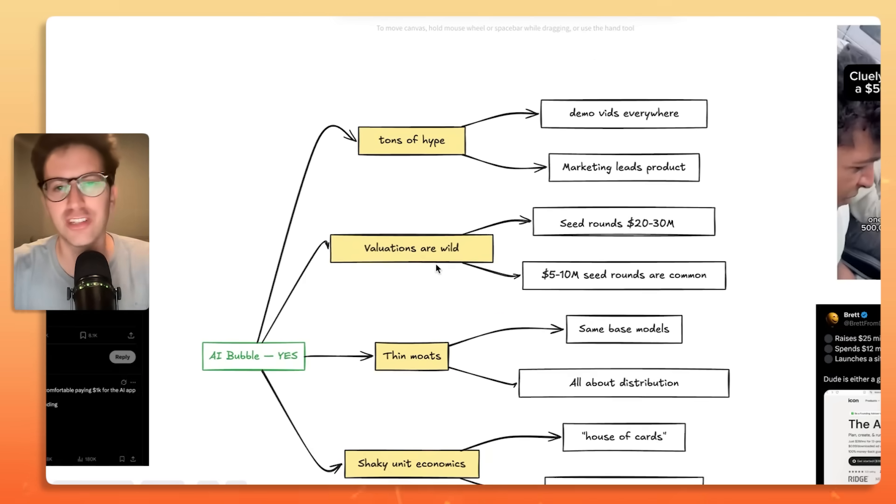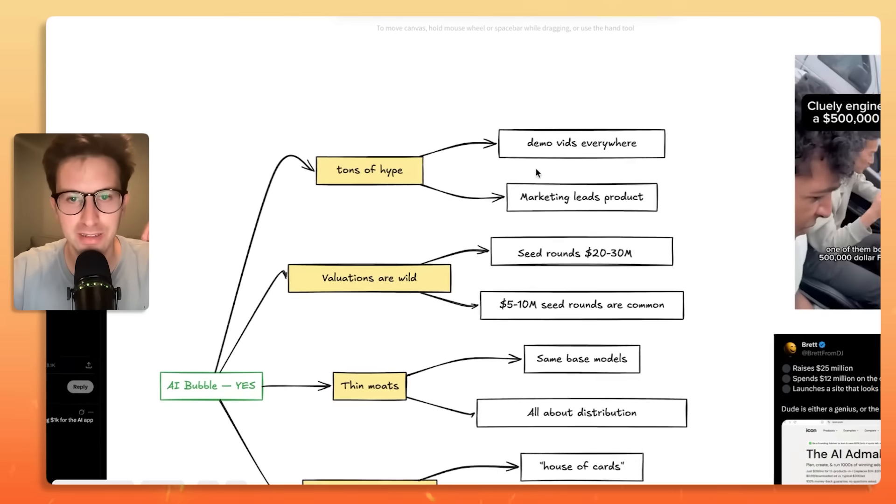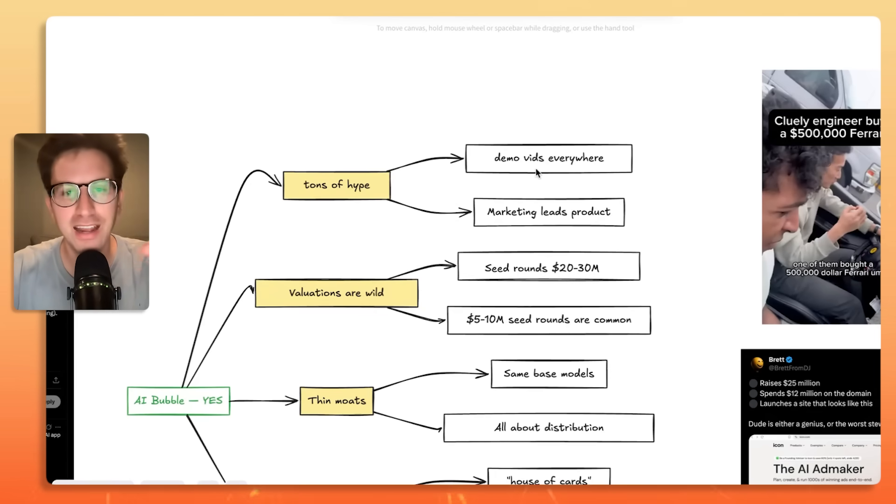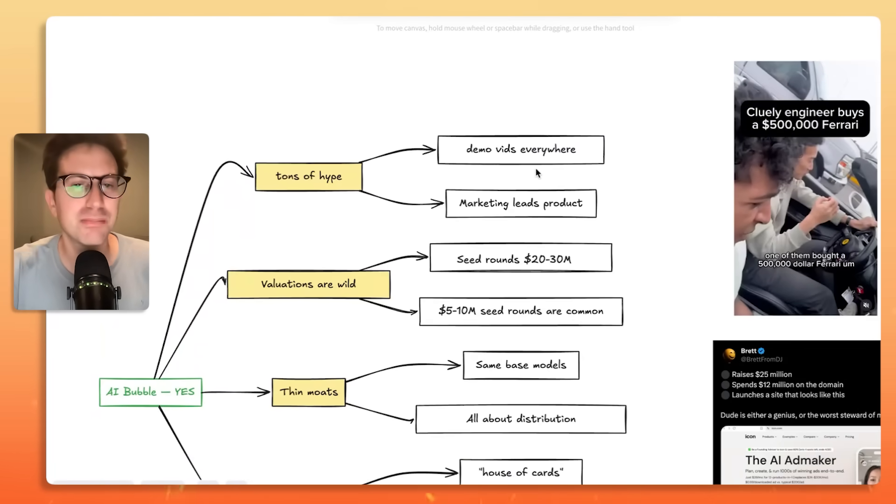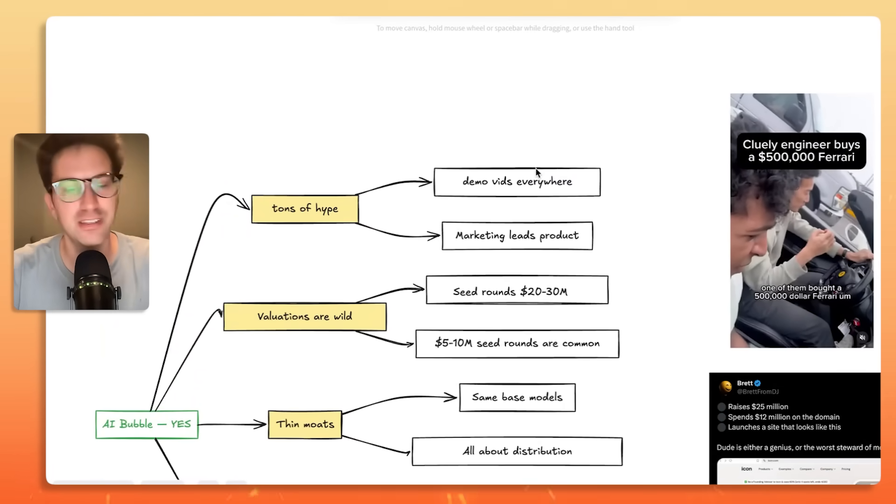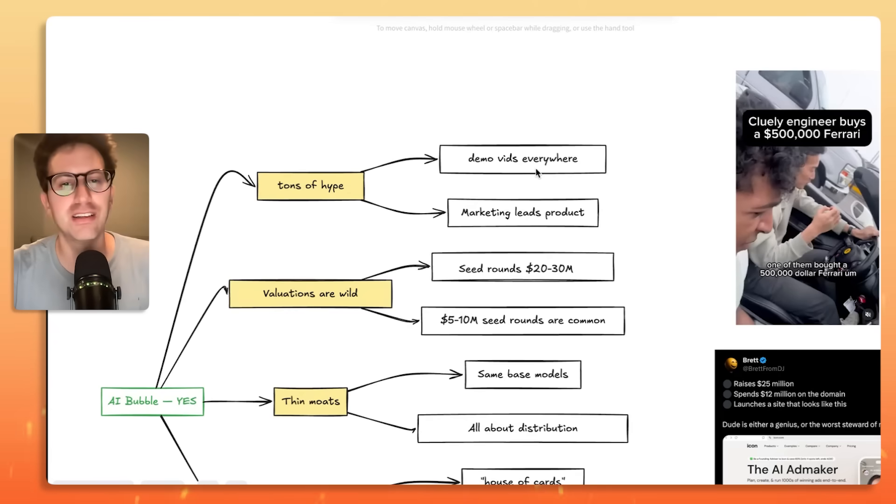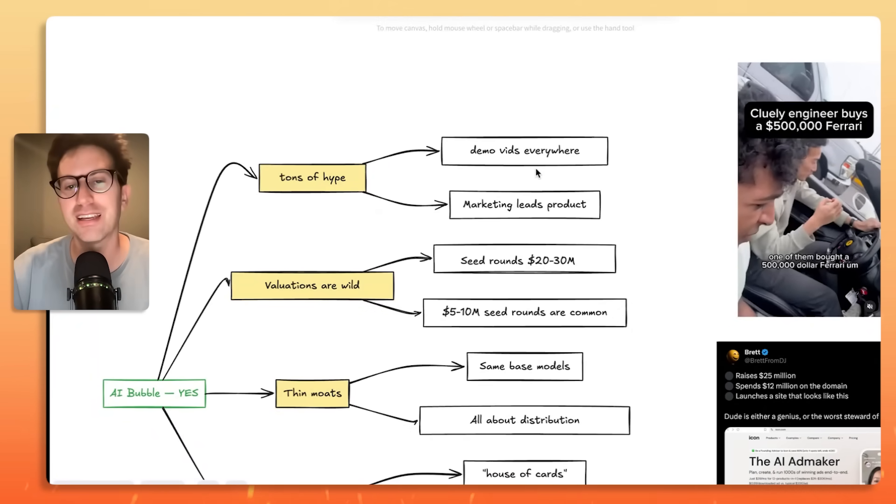The first reason is there's just tons of hype around AI startups. When you scroll on X today, I know that you've seen some of these demo videos of AI startups. They're cinematic. They're well done. They probably cost $100,000 to make. And they're everywhere. It's standard. It's the equivalent of when I was coming up in startups, being on TechCrunch. You had to be on TechCrunch. That's the demo video today. People spending tons of money on demo videos.